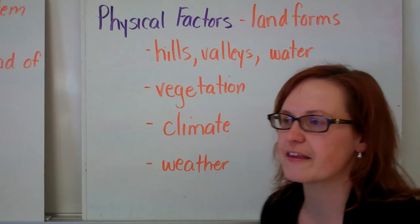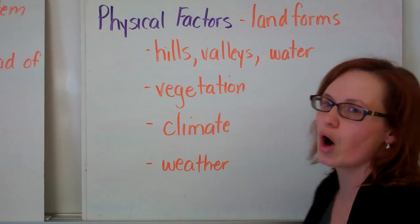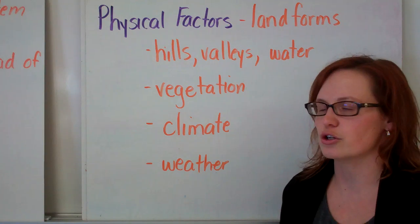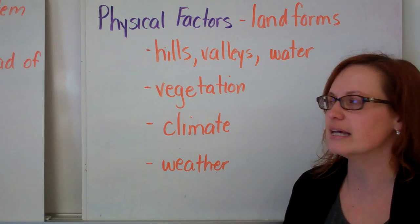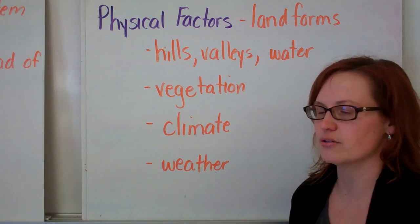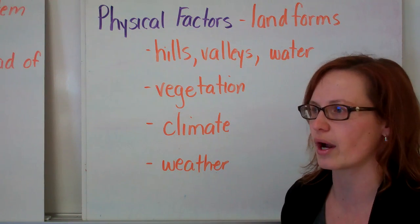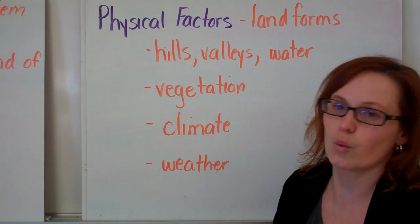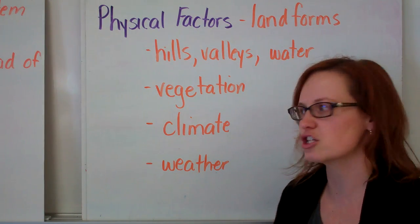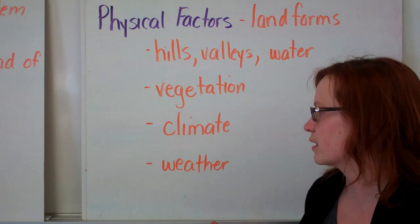Physical factors. You want to think about the actual landforms in the environment — are there hills, valleys, or water? Can people live on top of mountains or in valleys? What is the vegetation like — trees, grasslands, or swamp? That determines what and who can live there, what kind of structures and industries exist. Climate also matters — is it warm or cool? If we think about northern Canada, there's less population there largely because of the climate and the lack of resources and opportunity for wealth and jobs.